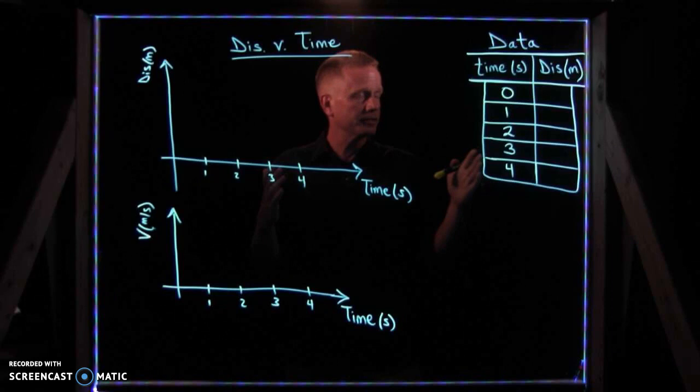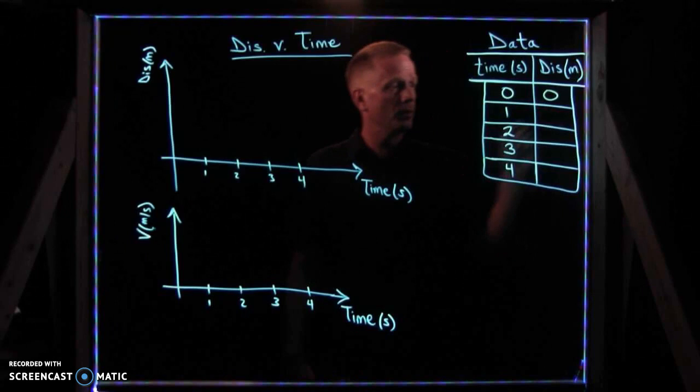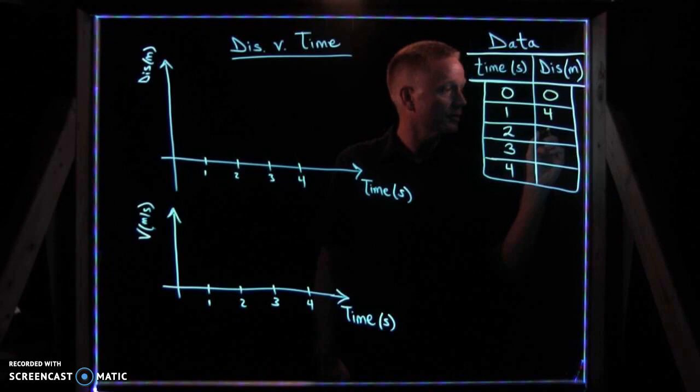Let's just imagine we collect some data using a motion sensor. A motion sensor can track your distance over time. If you're moving in the same direction at the same speed, let's assume that you start at time zero, zero meters away from the motion sensor, and one second later you're moving quickly to four meters away.